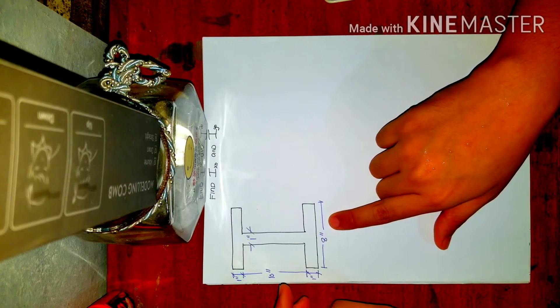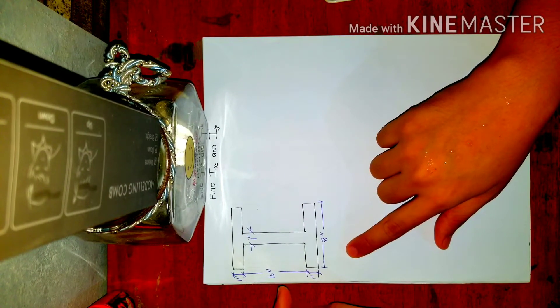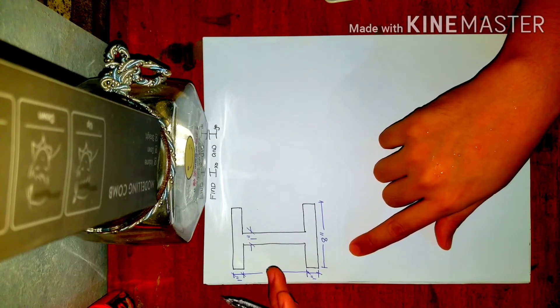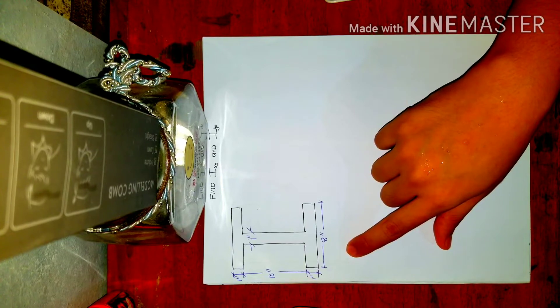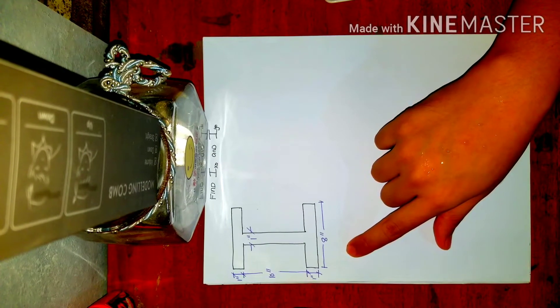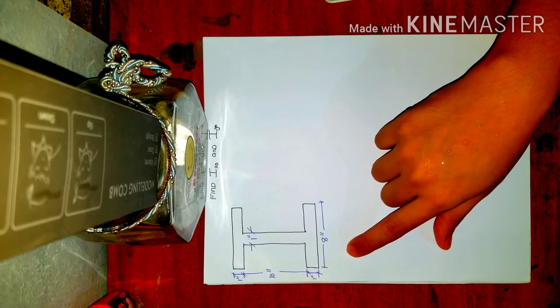Let's identify the parts of a W section. So the W section has two parts. You have the web and flange.